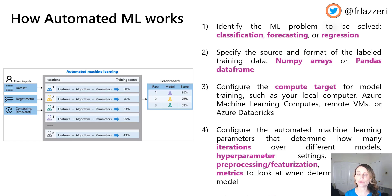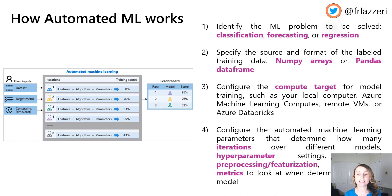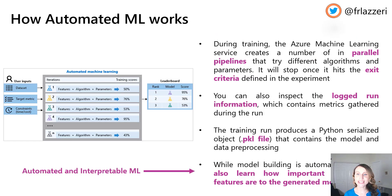It is also important to configure the automated machine learning parameters — these determine how many iterations over different models, hyperparameter settings, advanced preprocessing and featurization (essentially the feature engineering process), and what metrics to look at when determining the best model for your scenario. Finally, you submit the training run. During training, Azure Machine Learning Service creates a number of in-parallel pipelines that try different algorithms and parameters, and it will stop once it hits the exit criteria defined in the experiment.